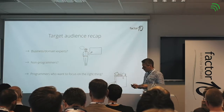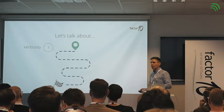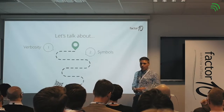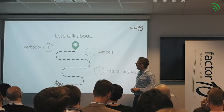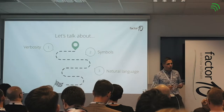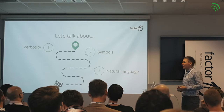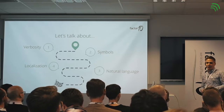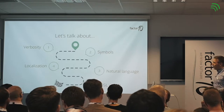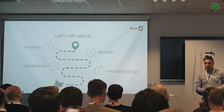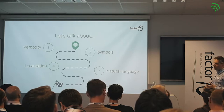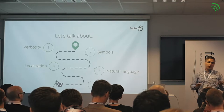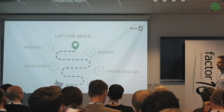The things I want to talk about today are: verbosity — meaning how much we have to type when we write a program in our DSL; symbols, because they're concise and expressive; natural language, because it's clear and precise — or so we think; localization, meaning writing programs in different languages; and finally some words on domain-specific language versus general purpose language. My goal is to give you some inspiration on what a DSL could look like by looking at other languages — how do they do it, and where can we get inspiration?